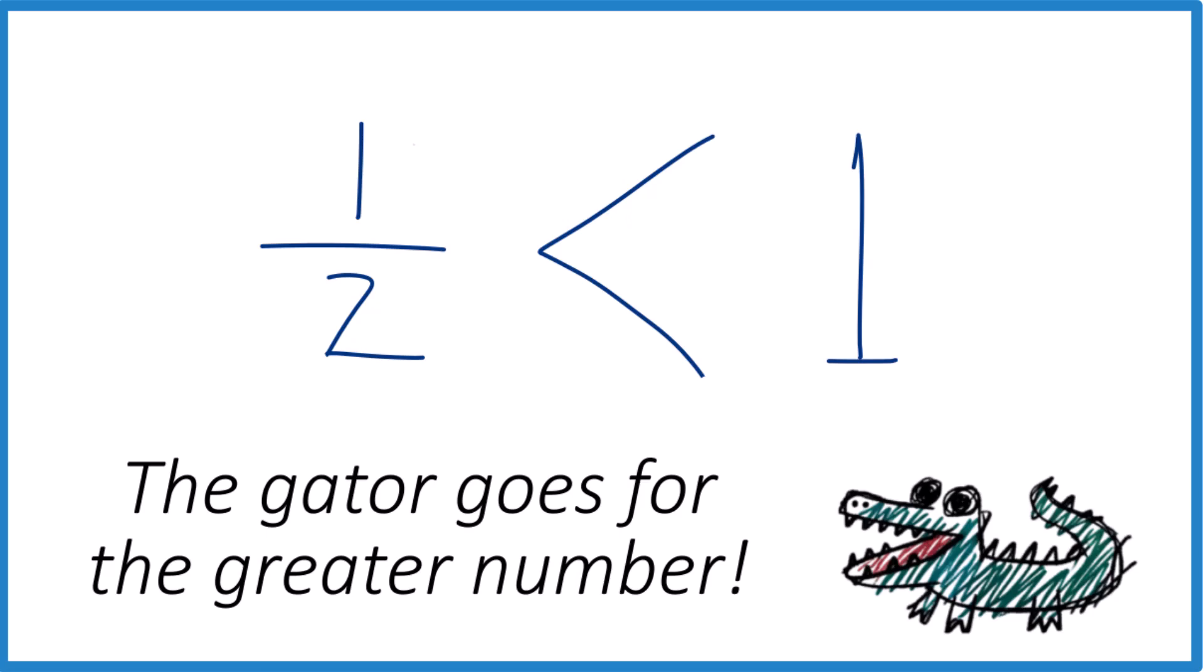So what about the less than symbol? Well, it just really depends how you read the problem. We could say one is greater than one half, or we could say one half is less than one. This points to the lesser number. So it's really kind of the same thing. This is our greater than and less than symbol.